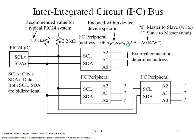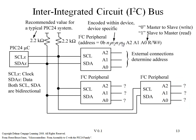The next three bits, labeled A2, A1, and A0, are determined based on the connection of the A2, A1, and A0 pins, which appear on many I2C devices. Finally, the last bit — read/write — will be 1 (true) on a read transaction, and 0 (false) on a write transaction.